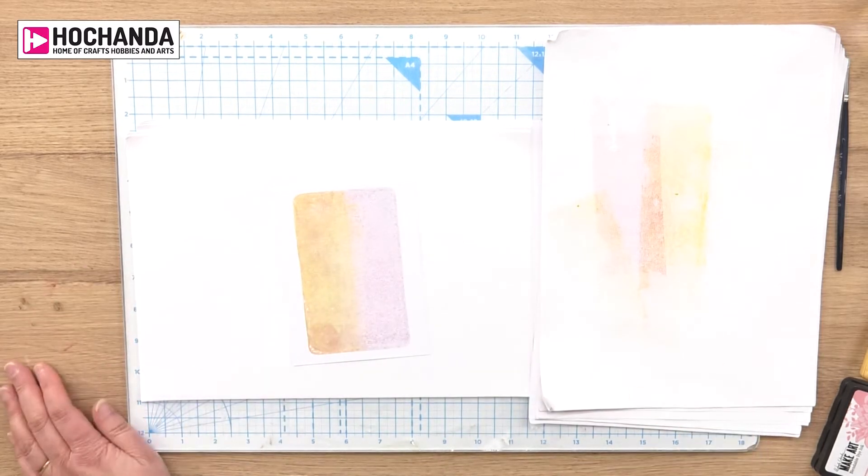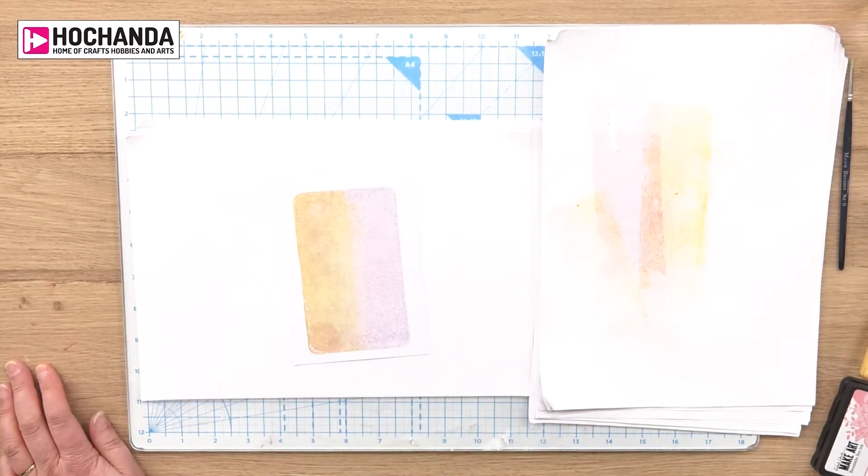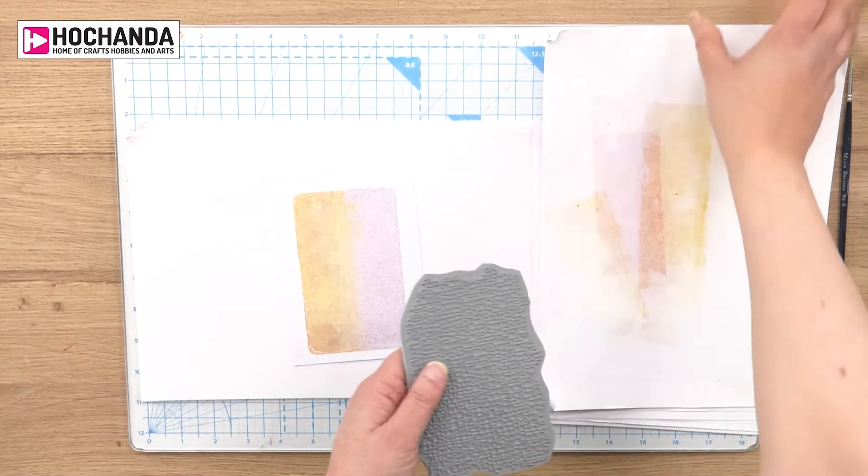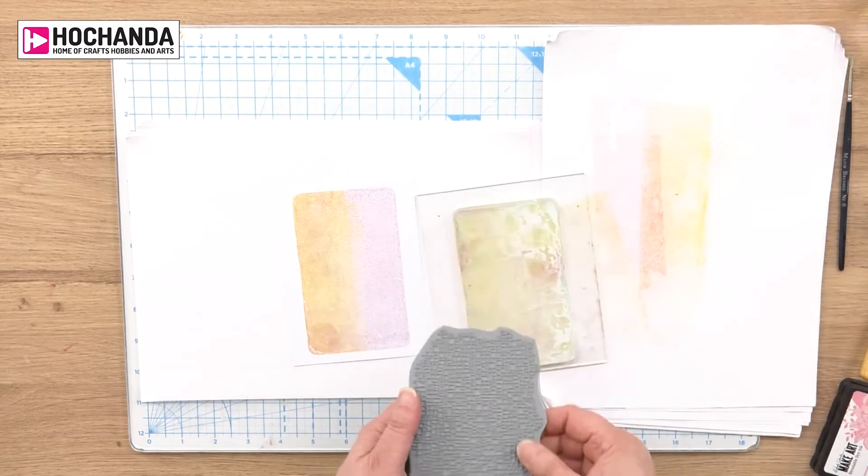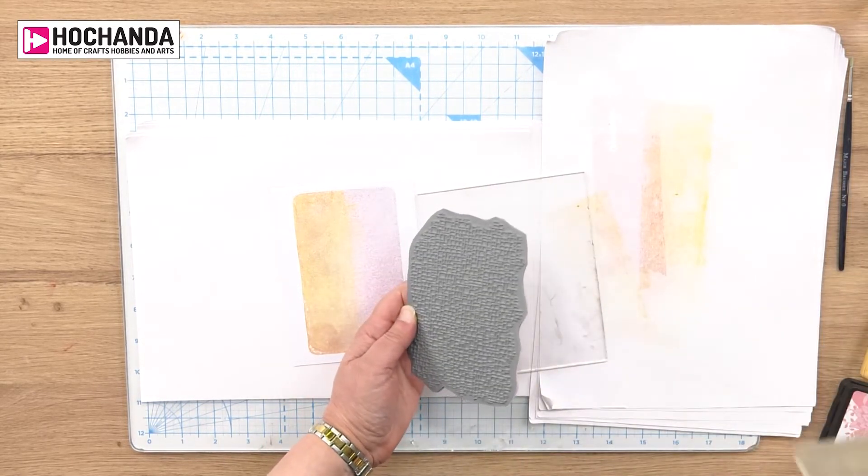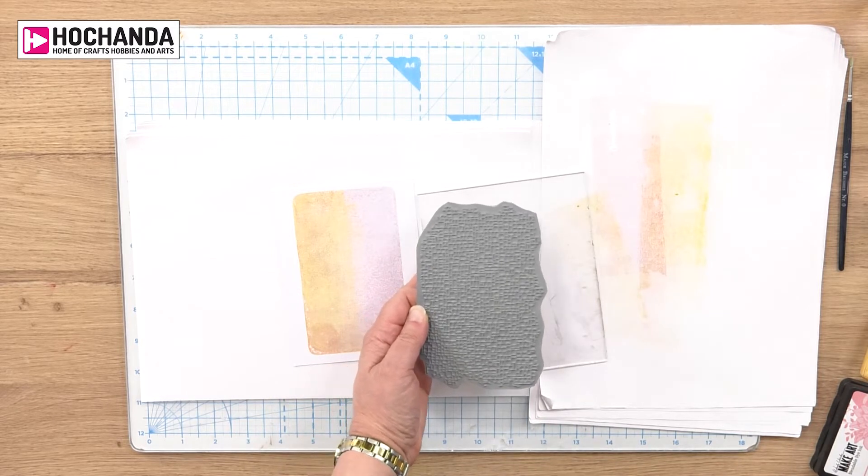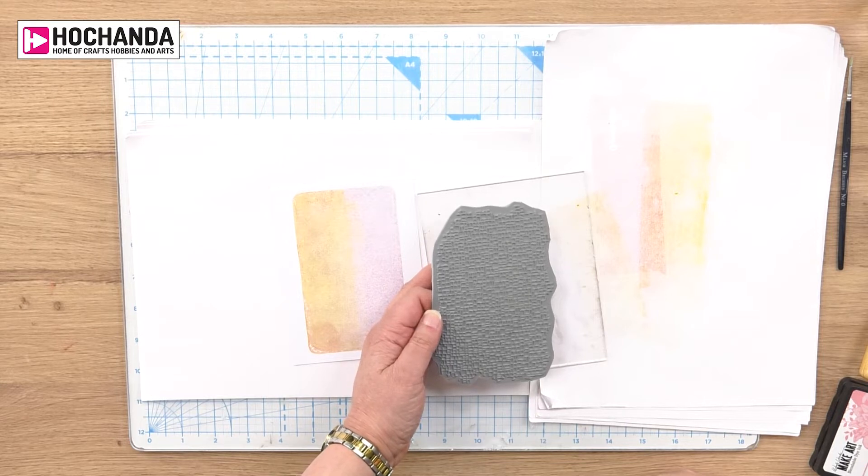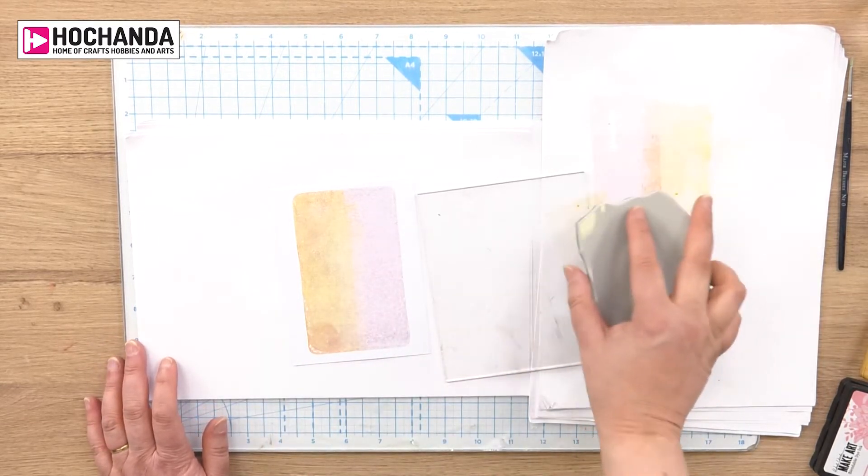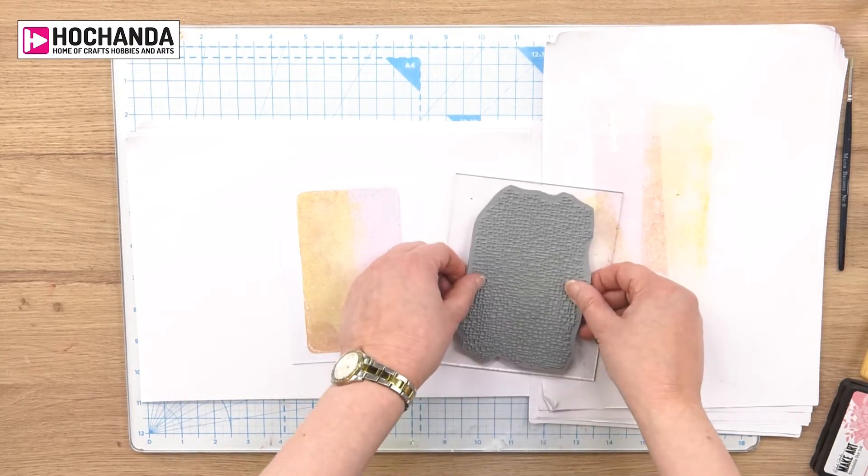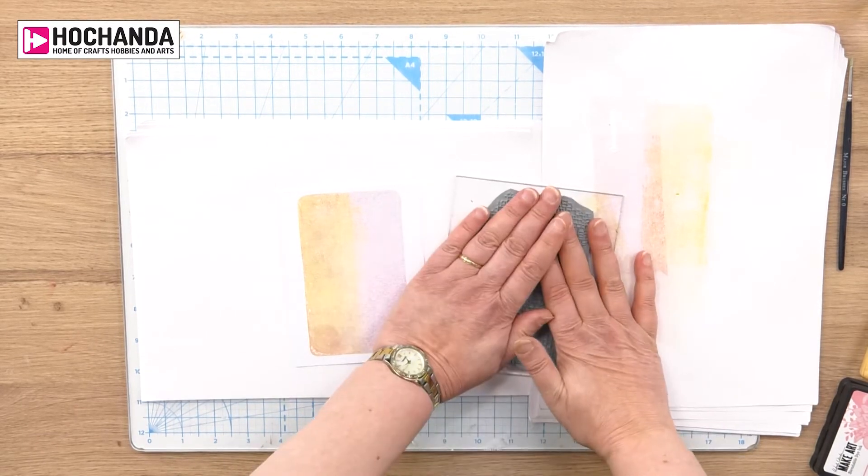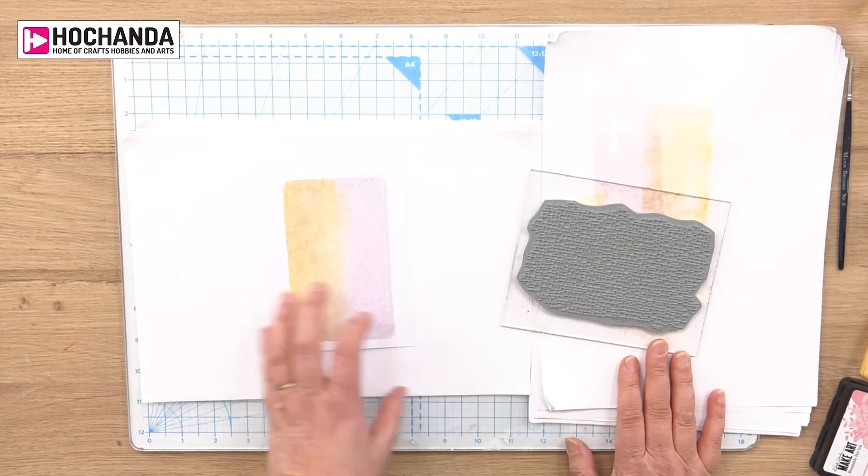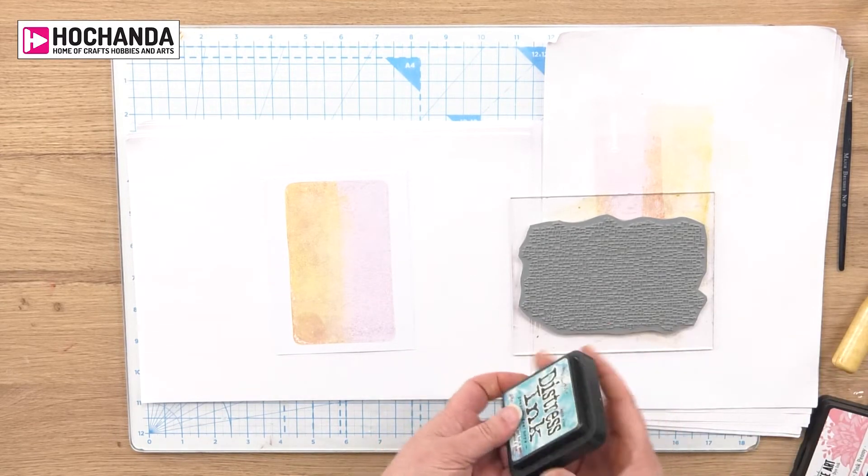One of the stamps we're having on our shows at the moment is a background stamp called On The Tiles. It's a fantastic background stamp, really great for adding to your existing stamping or helping create backgrounds. It works with any stamps, can be very pretty or very distressed and grungy, it's entirely up to you. I'm going to cover my jelly plate with this using peacock feathers distress ink.